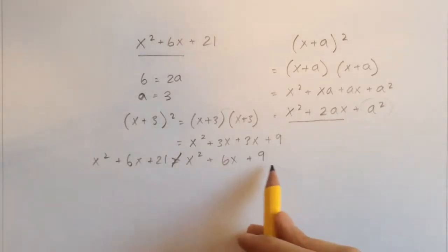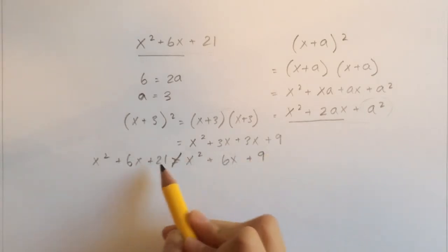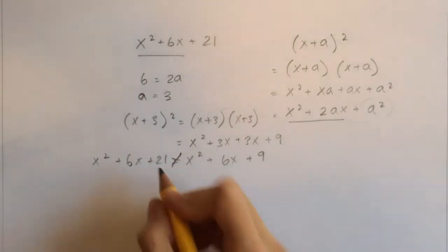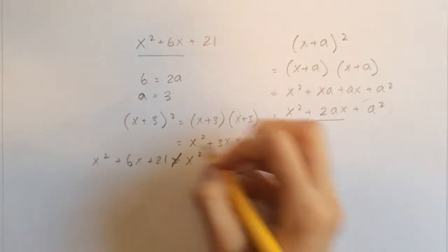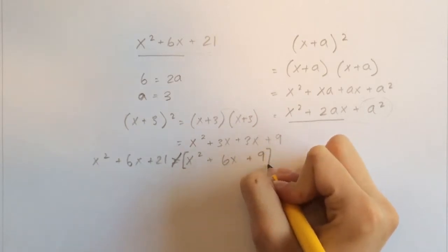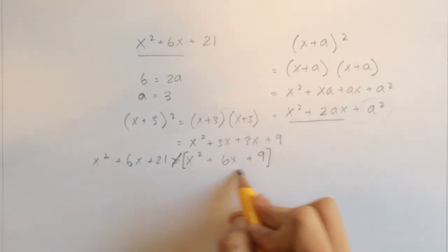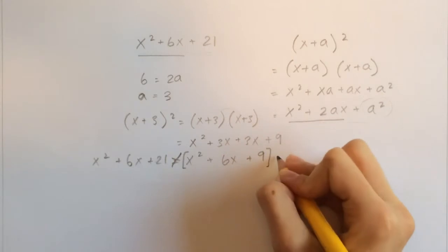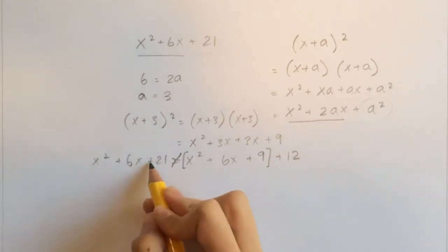But we can compensate a little bit to make these two things equal. Right here we have a 9, and right here we have a 21. So we can see that you can add 12 to this whole thing, this whole entity right here. We can add 12 to make these two things equal.